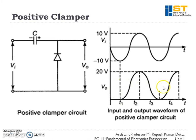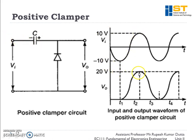This output waveform will get clamped up by 10 volts, so at this position we have zero volts and the axis becomes positive 10 volts. This signal gets superimposed on this DC voltage. When the input is zero volts, we have 10 volts only. When the input signal is minus 10 volts, we have minus 10 plus 10 that is zero volts. When the signal is plus 10 volts, we have plus 10 and plus 10, that is plus 20 volts. This waveform is the clamped-up version of the input voltage.